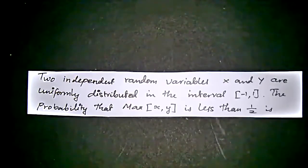The problem says two independent random variables x and y are uniformly distributed in the interval minus 1 to 1. The probability that max of x, y is less than 1 by 2 is...